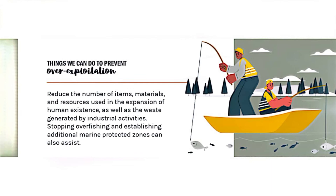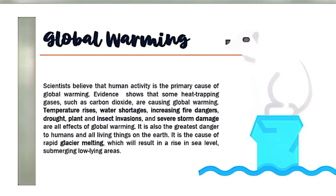Stopping overfishing and establishing additional marine protection areas can also assist. Global Warming. Scientists believe that human activity is the primary cause of global warming. Evidence shows that heat-trapping gases such as carbon dioxide are causing global warming. Temperature rises, water shortages, increasing fire dangers, drought, plant and insect invasions, and severe storm damage are all effects of global warming. It is also the greatest danger to humans and all living things on Earth, and it is the cause of rapid glacier melting, which will result in a rise in sea level, submerging low-lying areas.